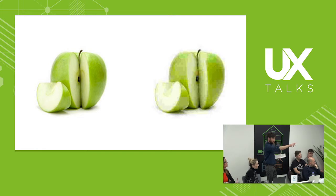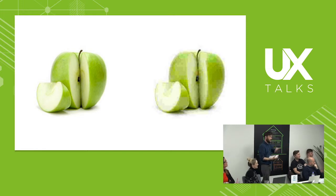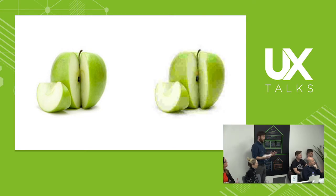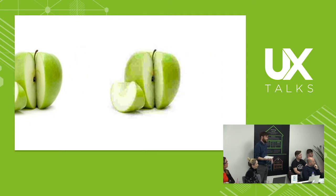You start getting artefacts — like the thing around the top of the cut section — where it says, well, this white is kind of like this light green, so this is probably part of the background. Because obviously the encoding engine doesn't know what the thing actually is. All it's doing is matching colours and saying that's fine.